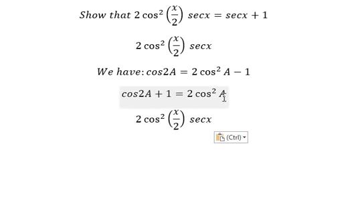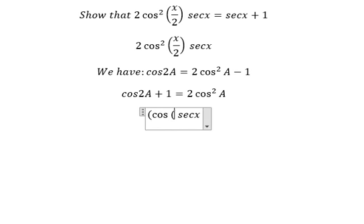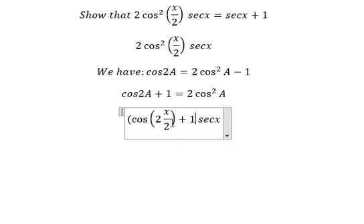So capital A represents interval S over 2. And now we change from this one into this one. So we will have about cosine 2 multiplied by S over 2, and we put 1 here.